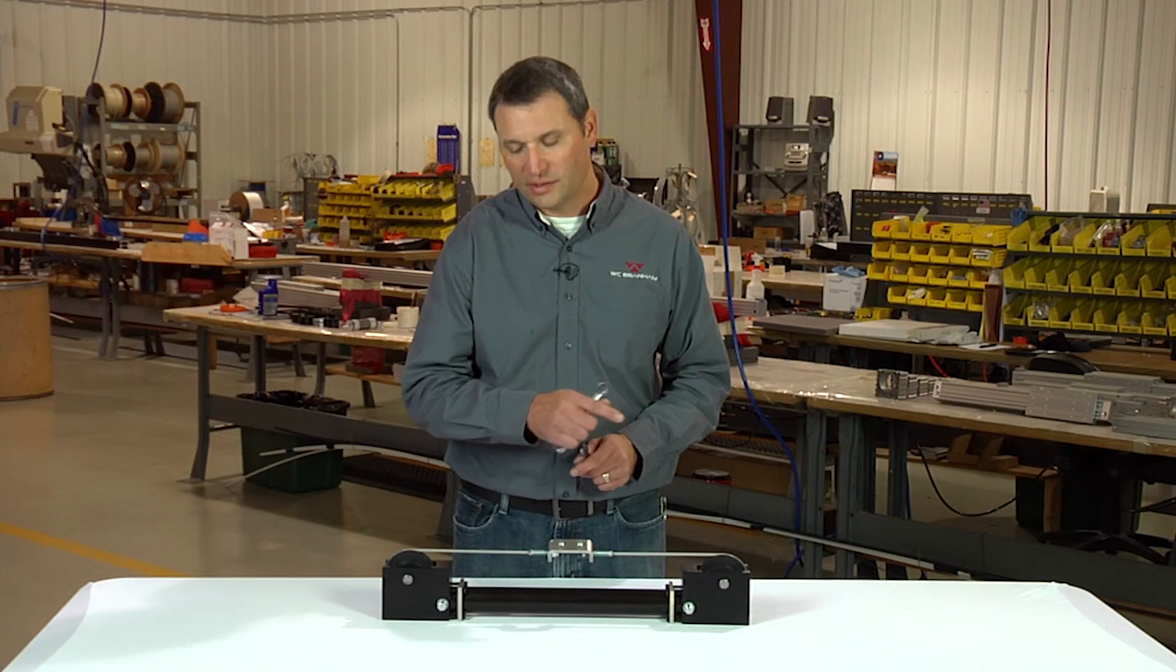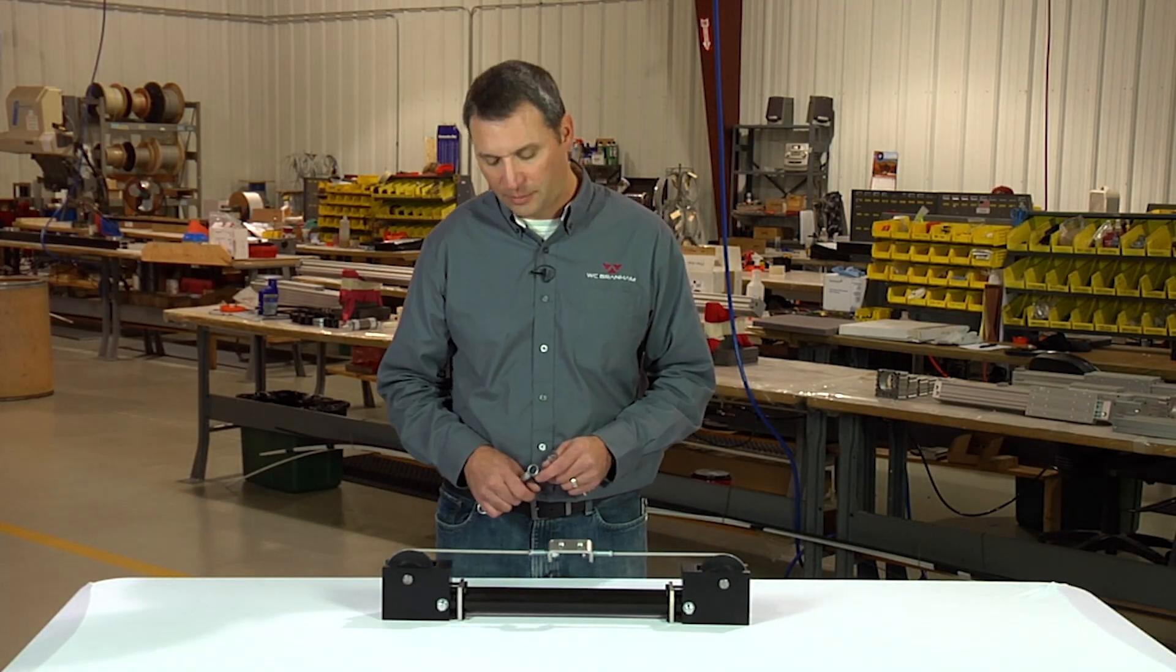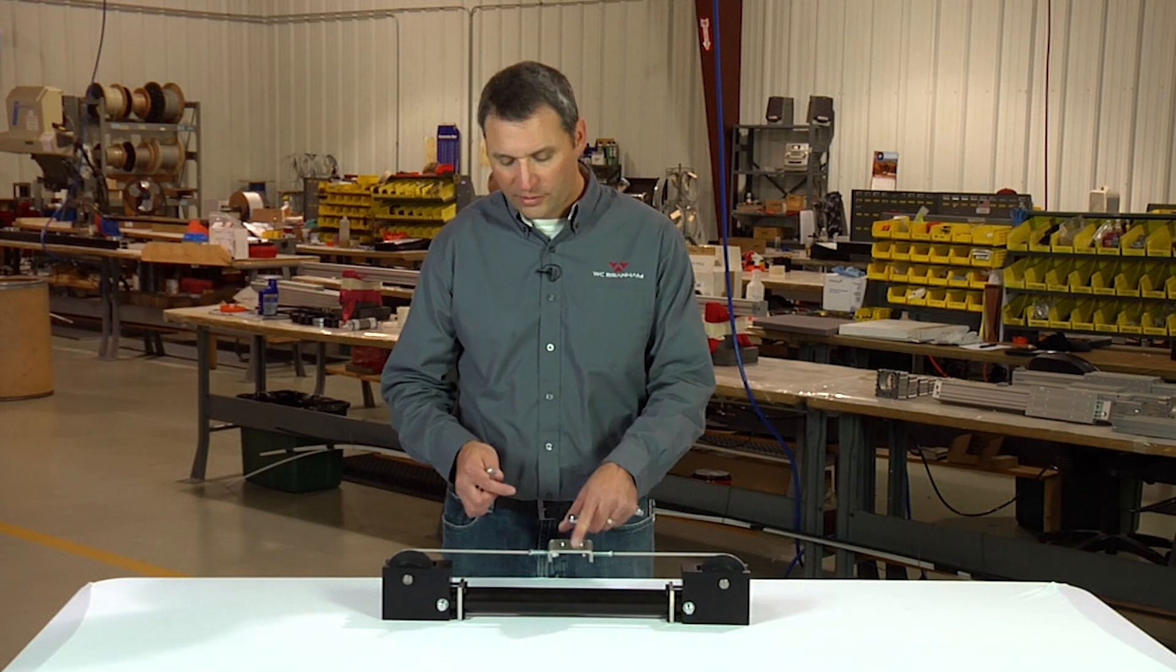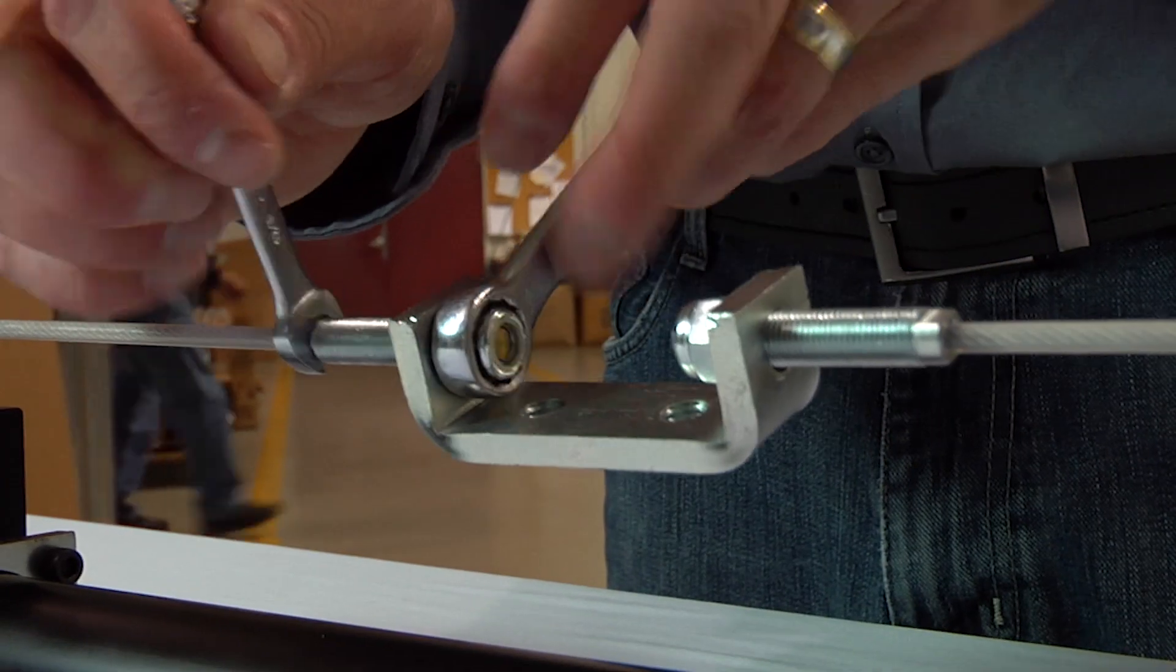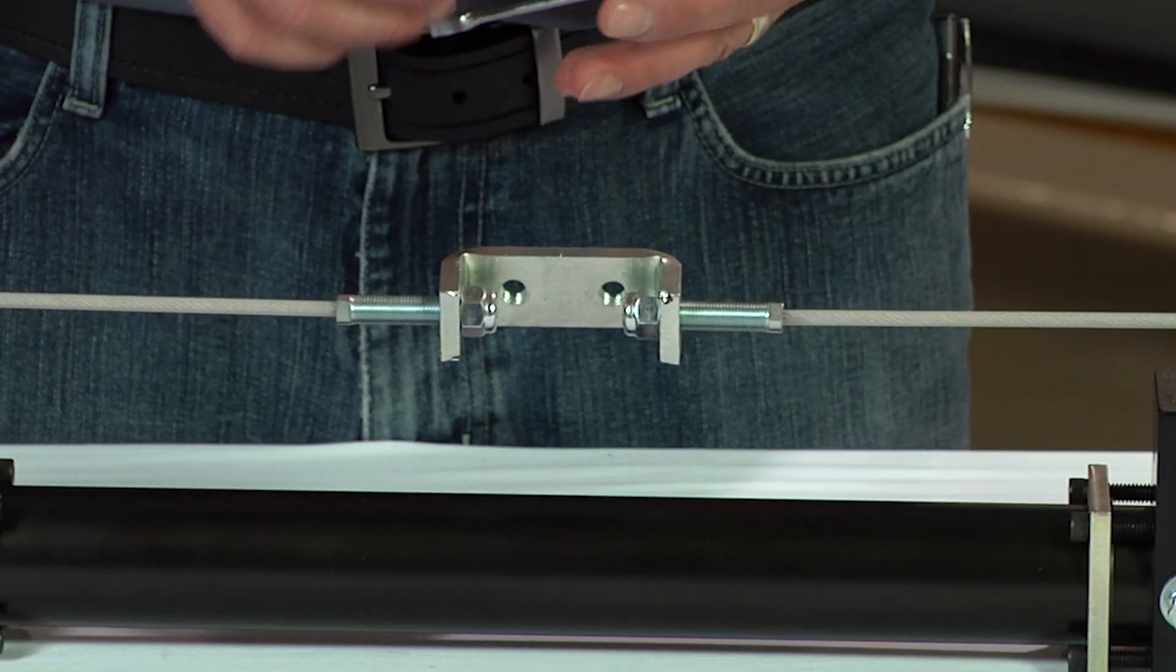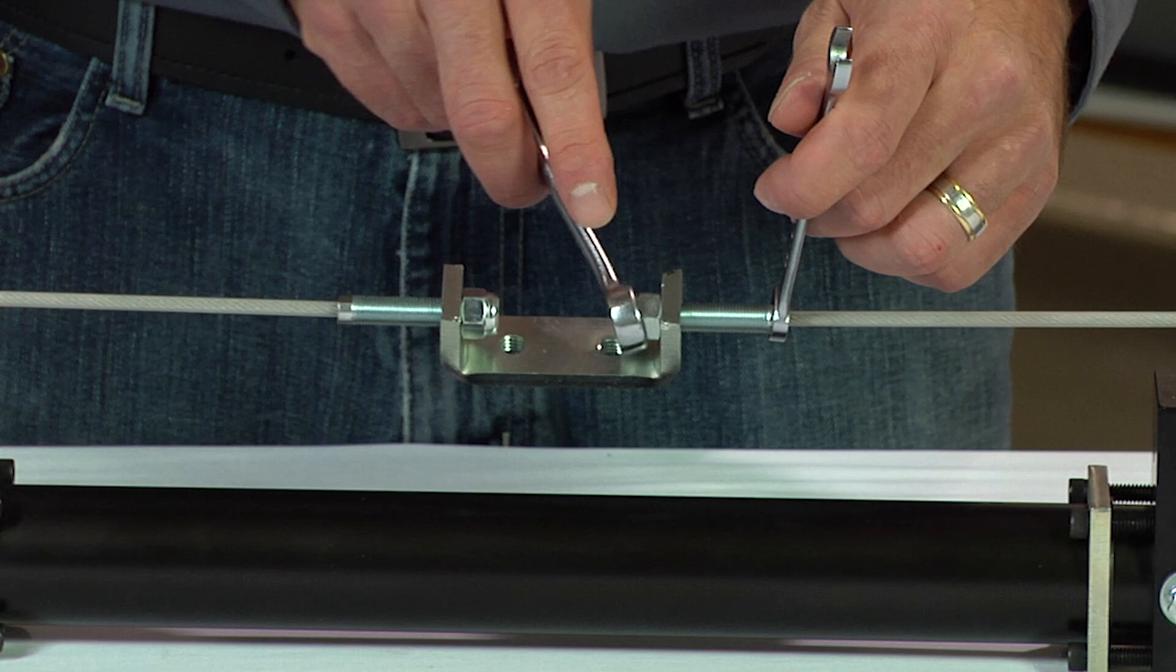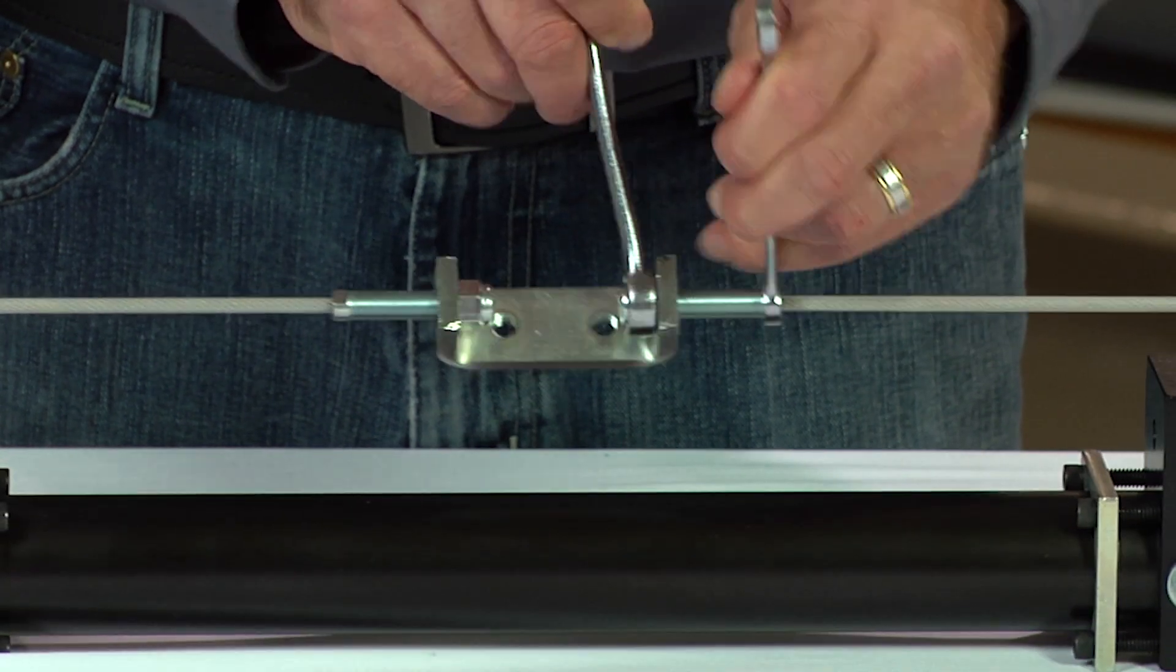Once you've done that you can pressurize one side and cycle the cylinder in one direction and observe the slack that occurs in the opposite side. We'll want to remove that slack by rotating the nut on that side and tensioning that cable and then cycle the cylinder to the other direction and perform the same step on the other side removing slack from both cables.